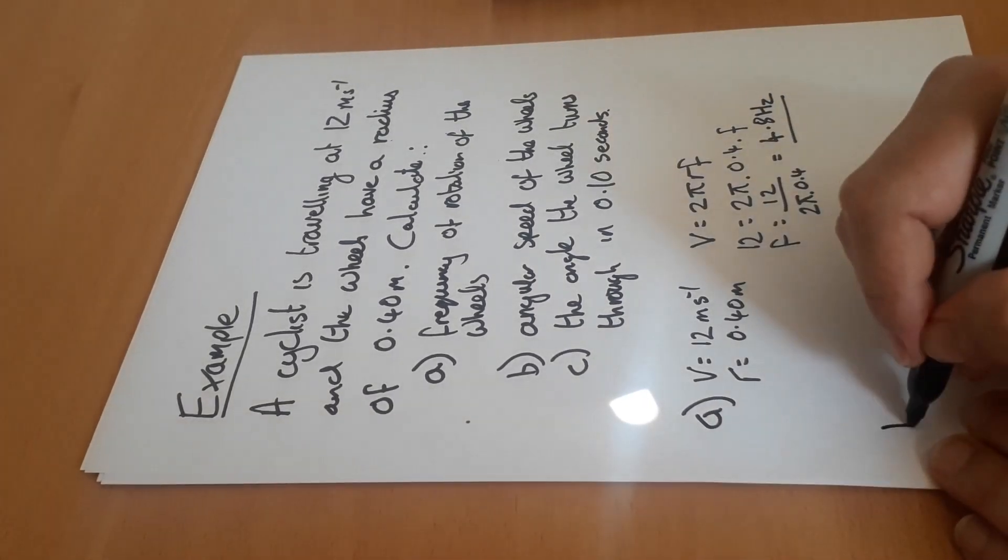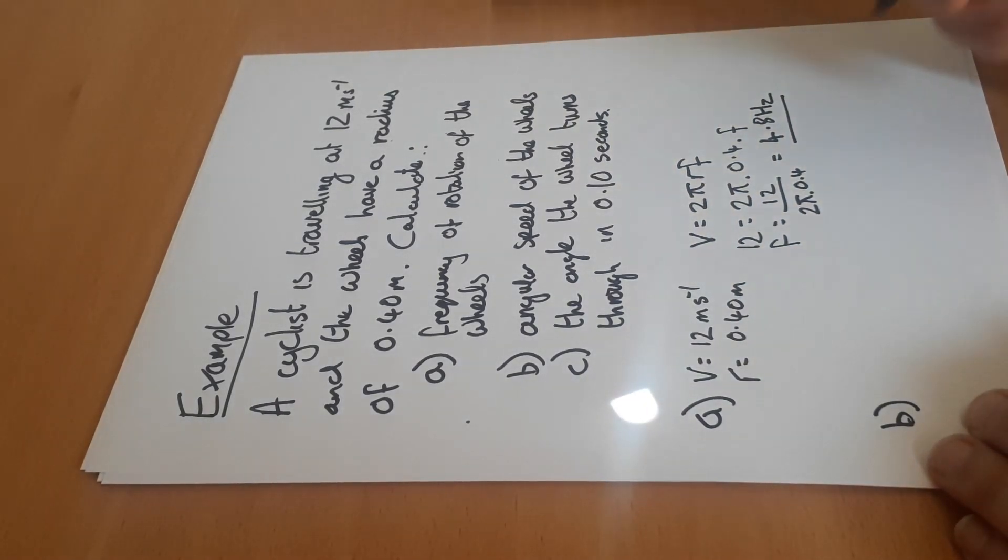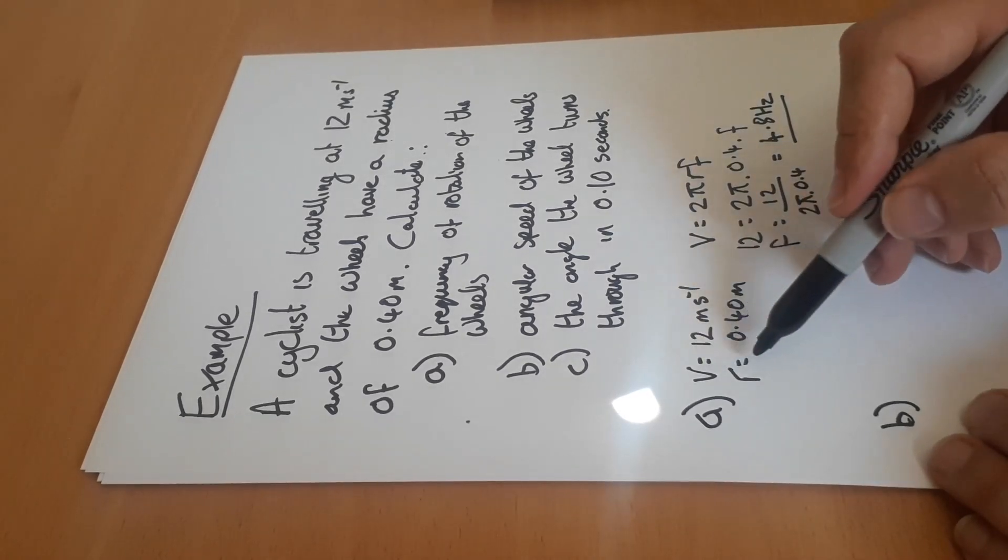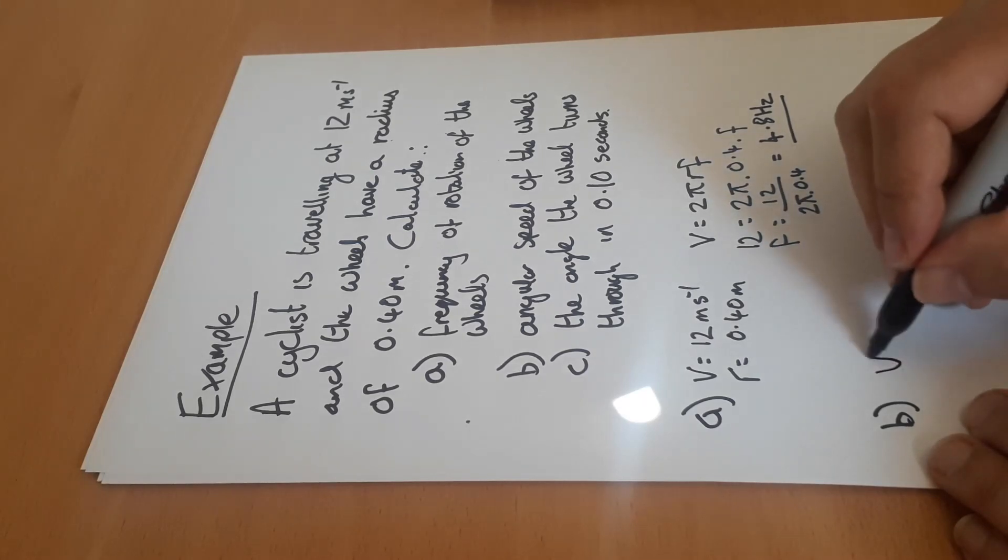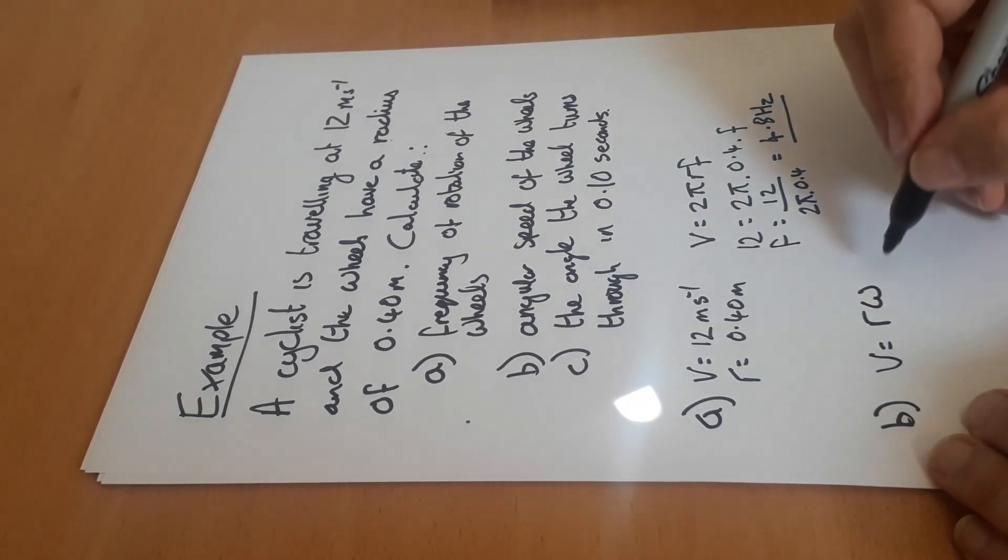Part b, the angular speed of the wheels - that's omega. So we've got tangential speed, we've got radius, therefore omega we can get from v equals r omega.